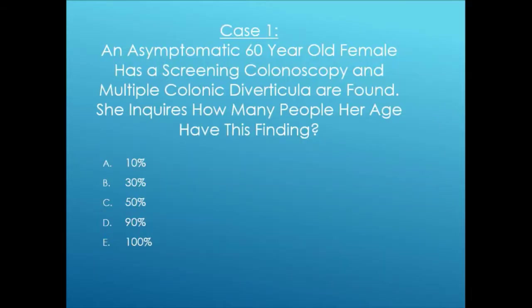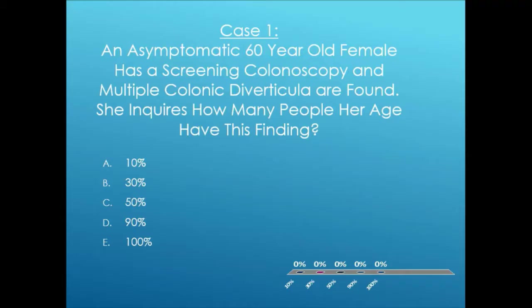First question: an asymptomatic 60-year-old female has a screening colonoscopy with multiple colonic diverticuli found. She asks how many people her age have this finding. The answer is about 50% — you have roughly a 50% chance at age 60 of finding diverticuli on screening colonoscopy.